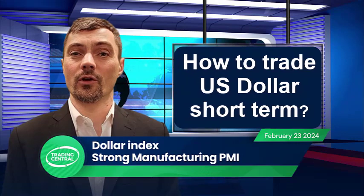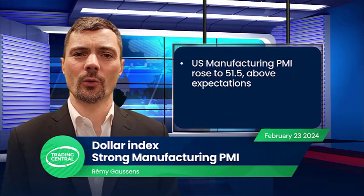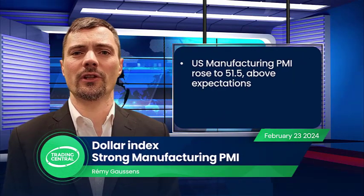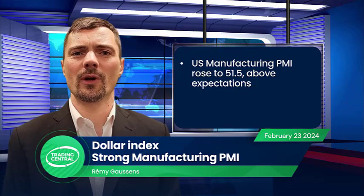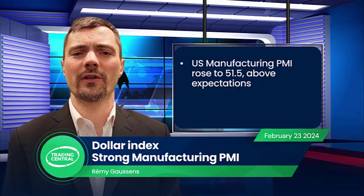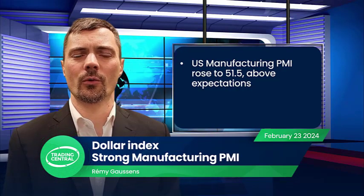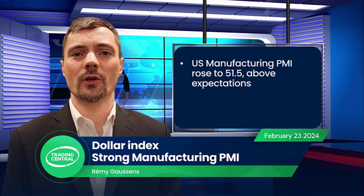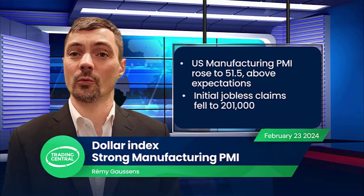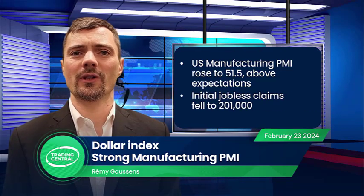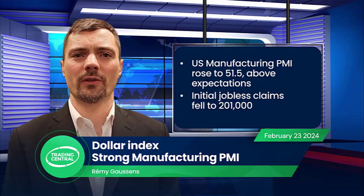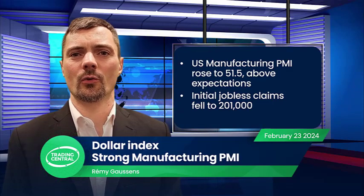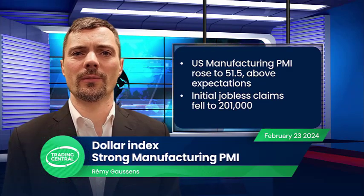On Thursday, the S&P Global US Manufacturing Purchasing Managers Index posted at 51.5 in February versus 50.3 expected. While the latest number of US initial jobless claims fell to 201,000 versus 215,000 expected.